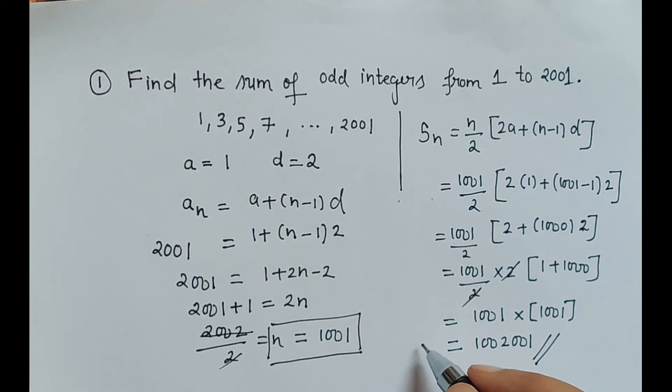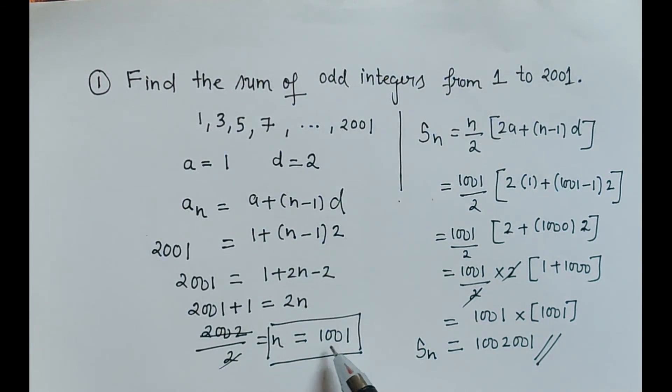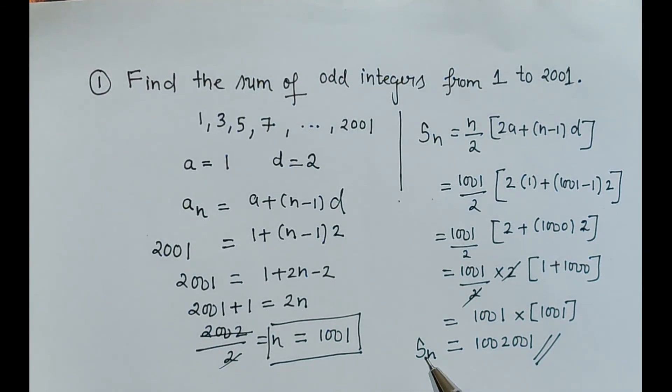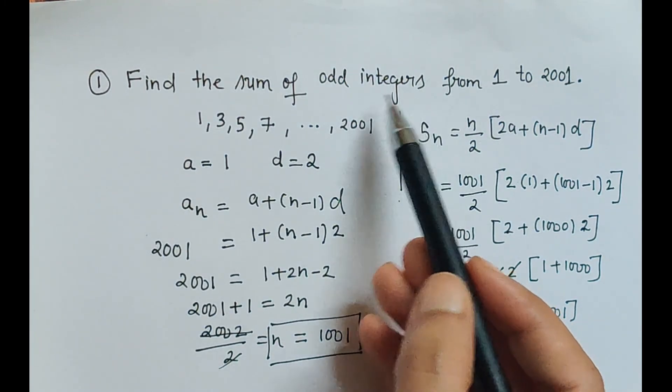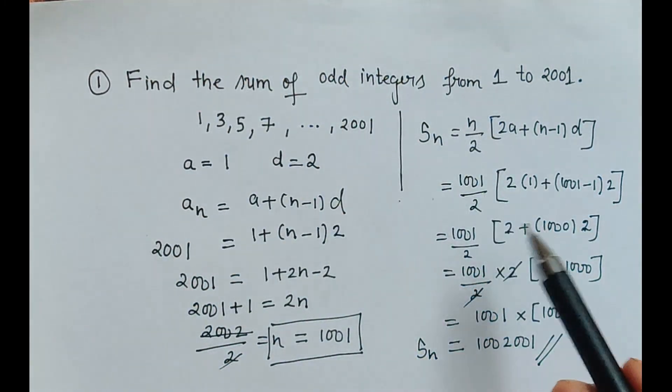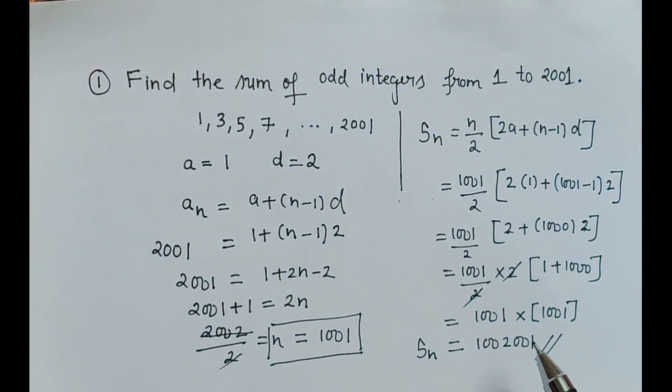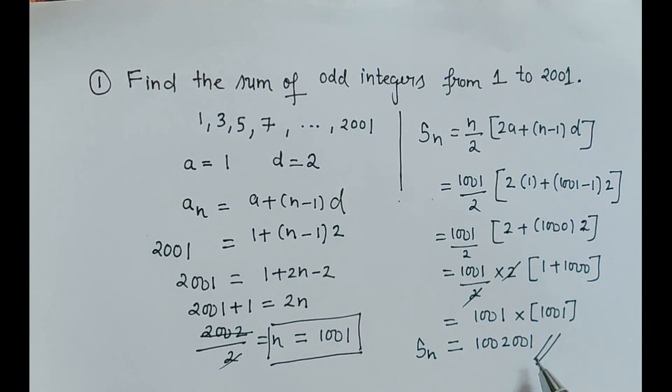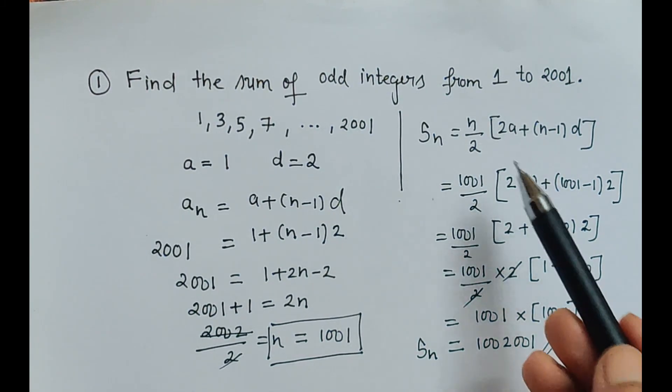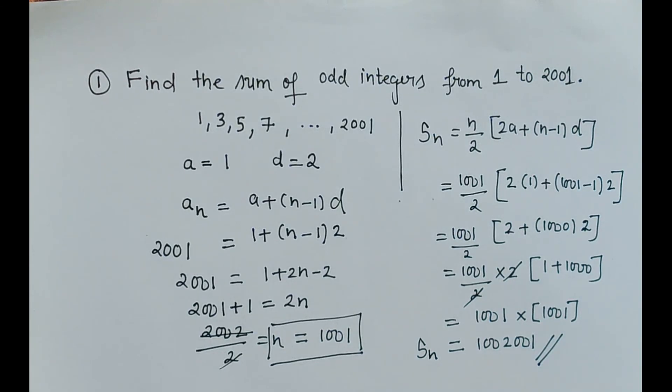So this is how we calculate sum up to any given term. So here we had to find sum of 1001 numbers whatsoever, it is in the form of odd integers as per this question. So this is how we have to solve, and this is the sum of odd integers from 1 to 2001. Thank you.